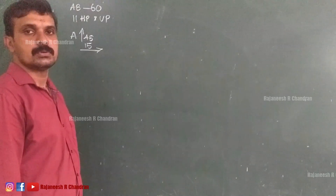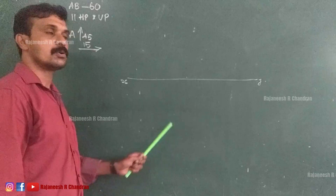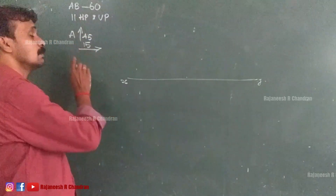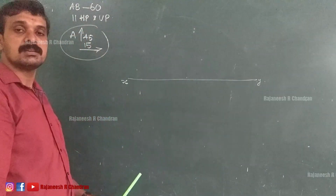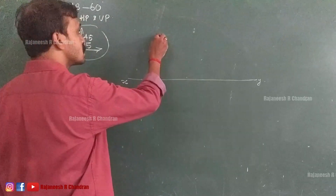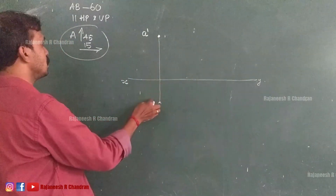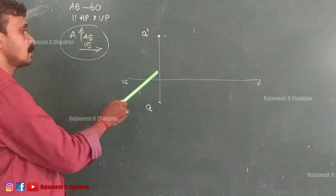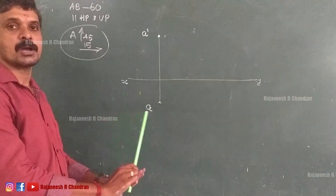We can start with the problem by locating point A. We have to draw the XY line. The point A is 45 mm above HP and 15 mm in front of VP. From the XY line, at a distance of 45 mm above, locate a point and name it A dash. Below the XY line at a distance of 15 mm, name it A. Since it is above HP it is taken above XY, and since it is in front of VP it is taken below XY.